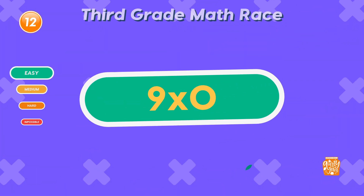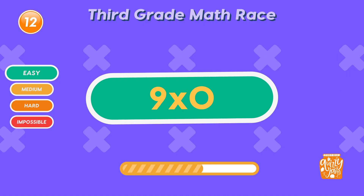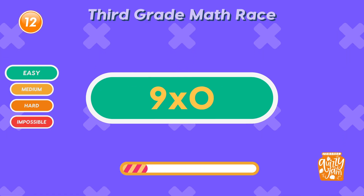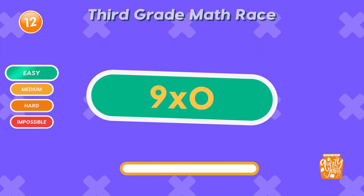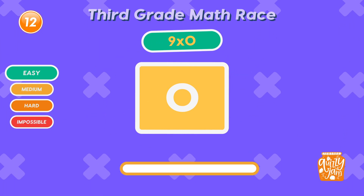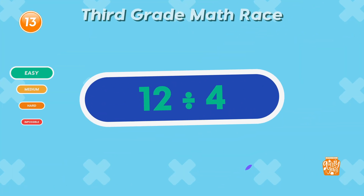What is 9 times 0? 0! Anything times 0 is still 0! You nailed it!